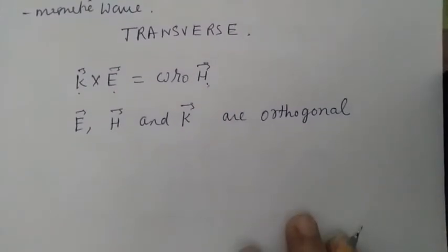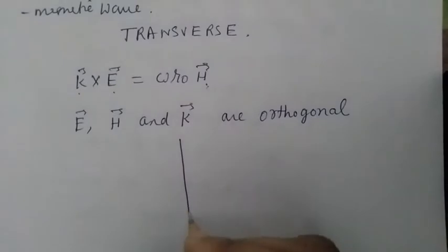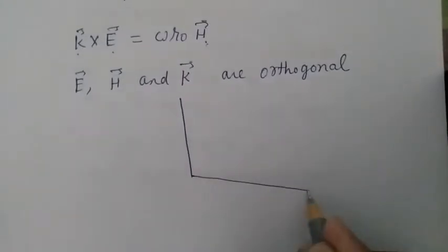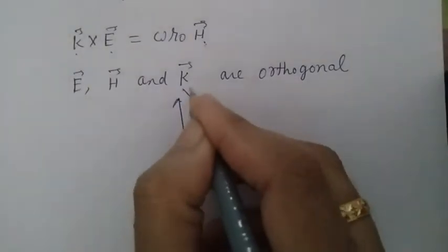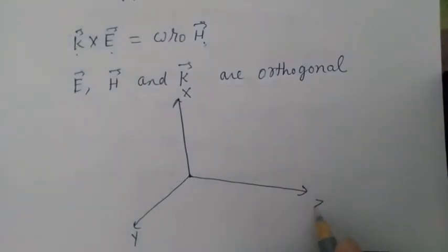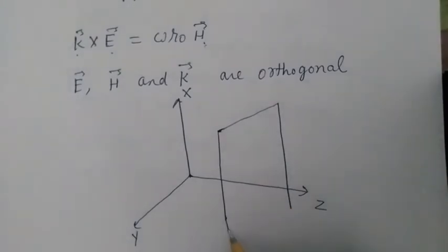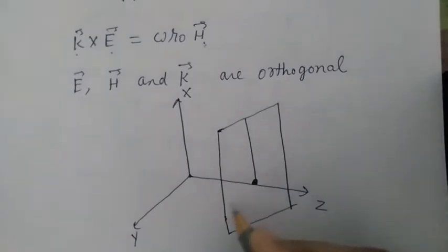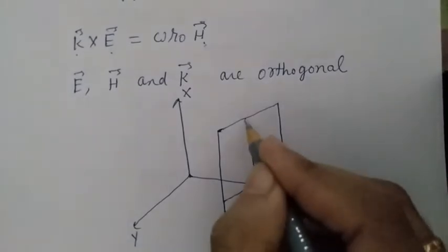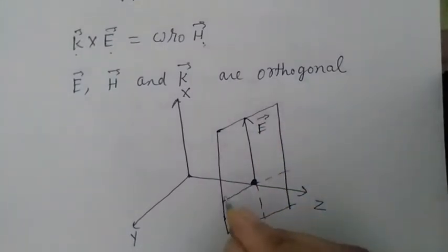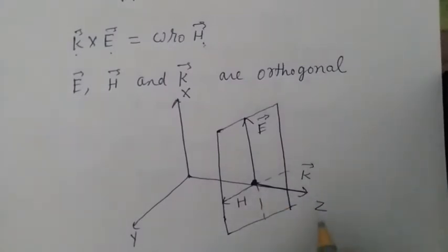We can show the direction of propagation of an electromagnetic wave like this. Suppose this is the x-axis, this is the y-axis, and this is the z-axis. Let this be the direction of vector E, this be vector H. Then this is the direction of propagation of the electromagnetic wave, that is along the z-direction.